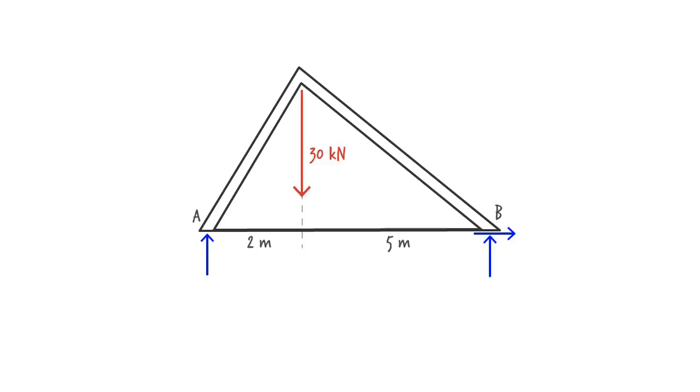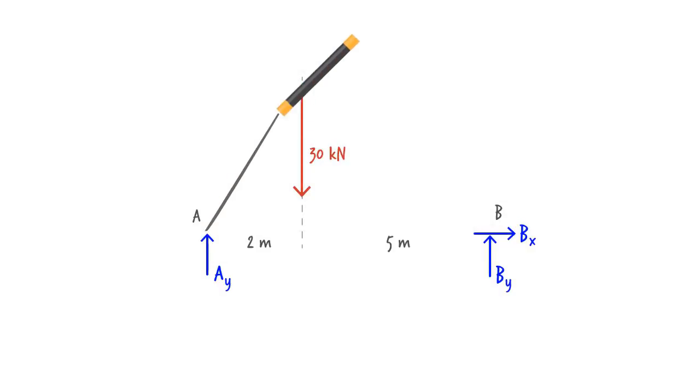We should also label the unknown forces since we need to write the equations in terms of the force magnitudes. Here, I am going to label the magnitude of the reaction force at the roller as AY and use BX and BY for the force magnitudes at the pin support. And I am going to draw a triangle as the outline of the structure which shows the location of the forces on the bridge.